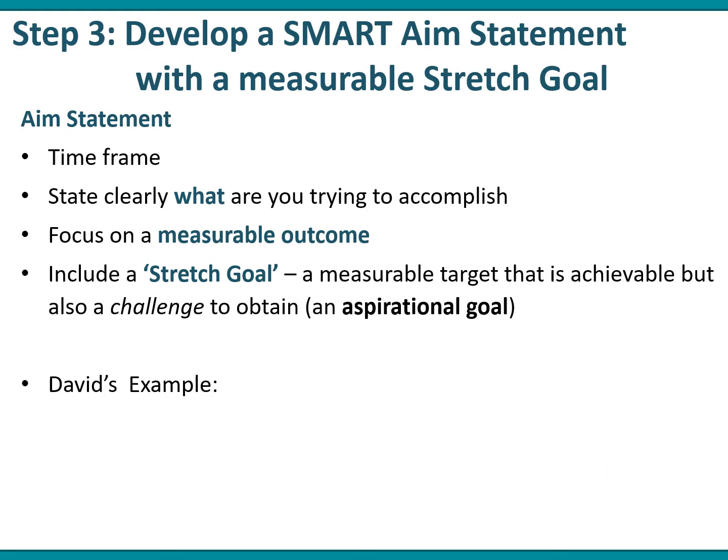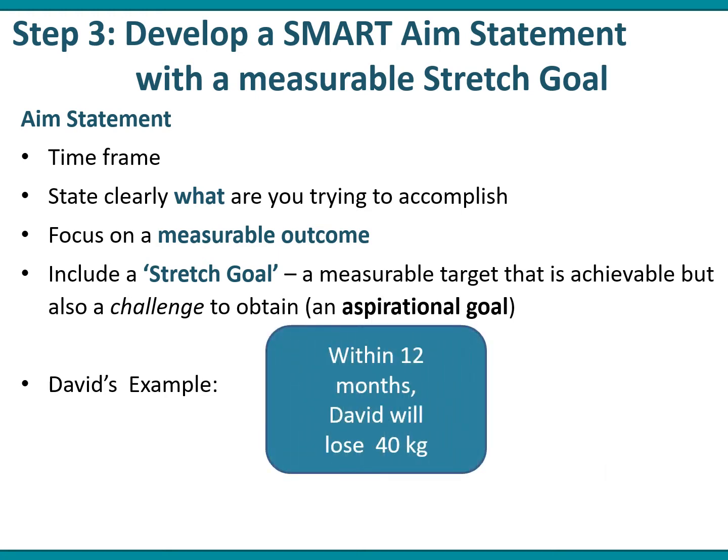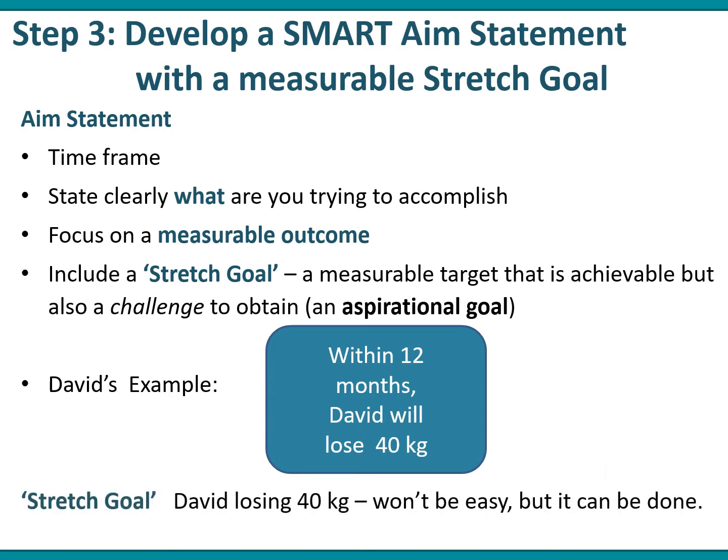With David's example: within 12 months, David will lose 40 kilos. That's his aim statement. The stretch goal here is David losing 40 kilos. He currently weighs 130 kilos, so to lose 40 won't be easy, but it can actually be achieved.